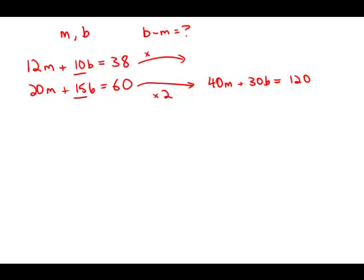I'm going to multiply the top equation by negative three. I'm going to multiply by a negative so that I can simply add and cancel. Multiply by negative three, I get negative 36M minus 30B equals negative 114.